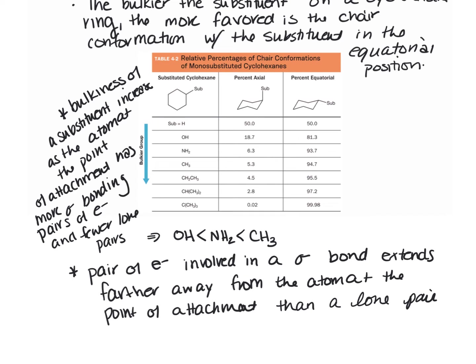The second trend is easier to see as bulkiness increases: the atom at the point of attachment is bonded to more alkyl groups. This atom is bonded to one alkyl group, this one to two, this one to three. This is much bulkier than that group. Bulk increases as we have more alkyl groups bonded to the atom at the point of attachment.